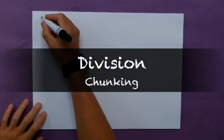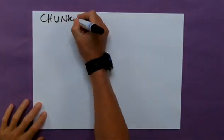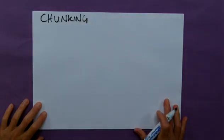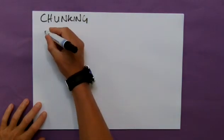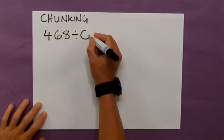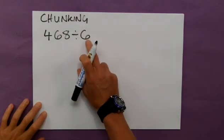This method of division is called chunking, and it's such a brilliant way to help your child do division, which is often a big sticking point for children. I'm going to start with a really complex question, 468 divided by 6. This does rely on your child knowing their 6 times table.